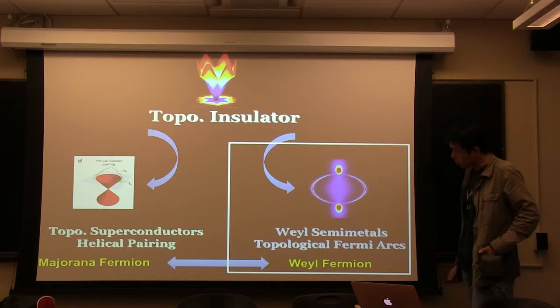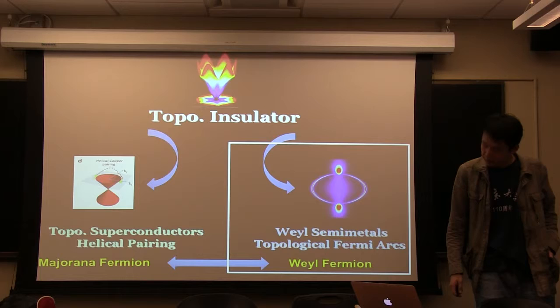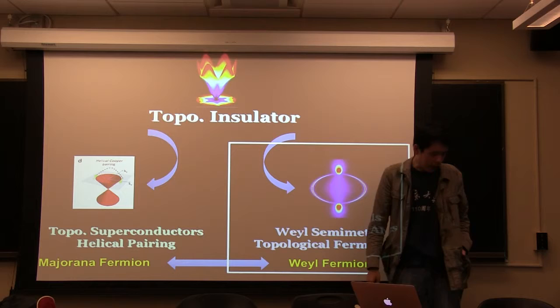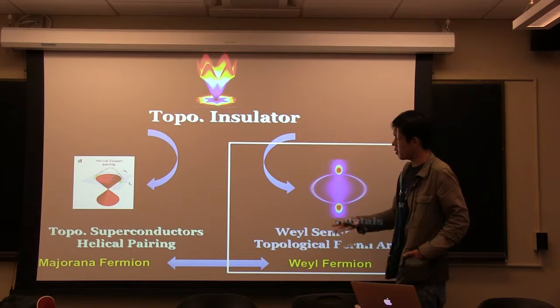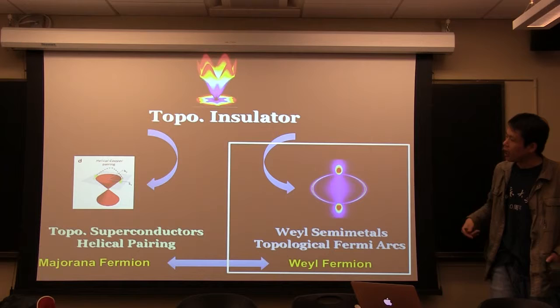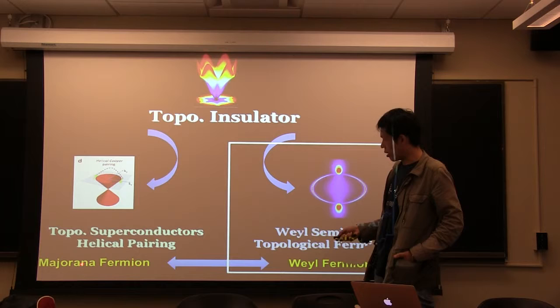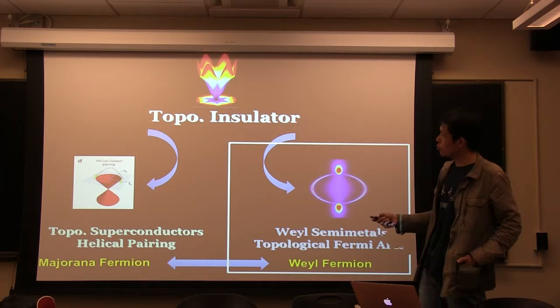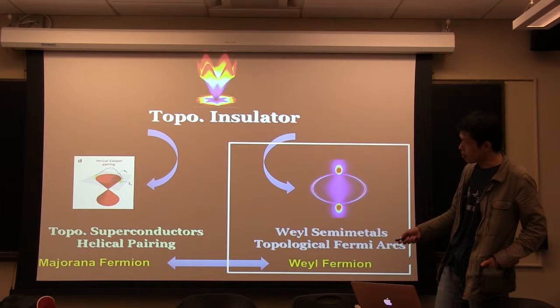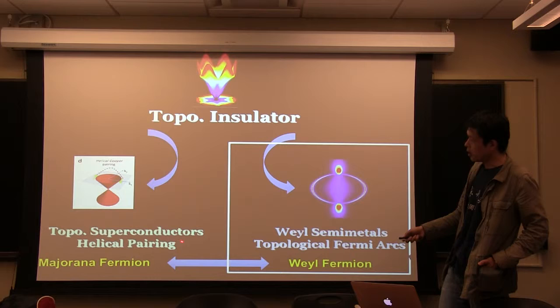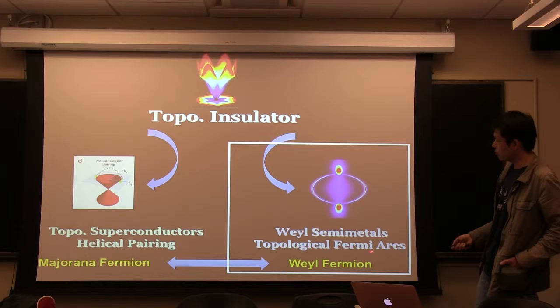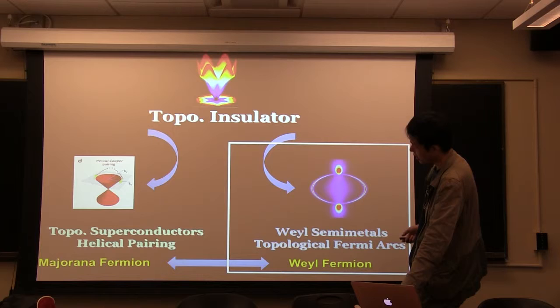Topological insulators in 3D were discovered around 2007 and 2008. It's well known that on the surface they have Dirac fermions, which are spin-momentum locked Dirac particles. In quantum field theory, we know there are two other types of fundamental fermions: Majorana fermions and Weyl fermions. The two truly exciting new frontiers emerging from topological insulators are to search for Majorana fermions, linked to finding topological superconductors, and to search for Weyl fermions, linked to finding a topological Weyl semimetal. Today I'm going to focus on the second part about the Weyl semimetal.